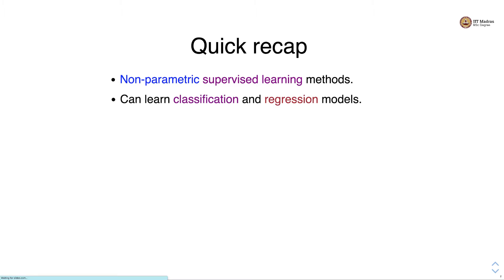Let's take a quick recap of what decision tree does. Decision tree is a non-parametric supervised learning method. It can learn both classification as well as regression models. Decision tree predicts label based on rules inferred from the features in the training set.